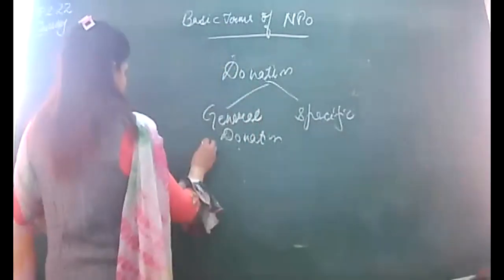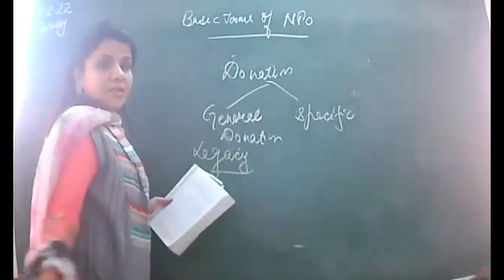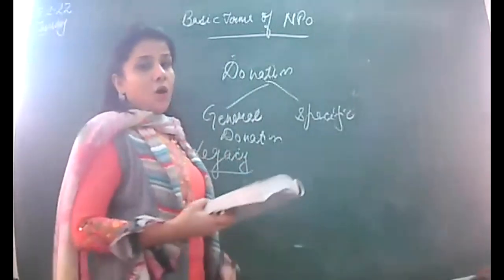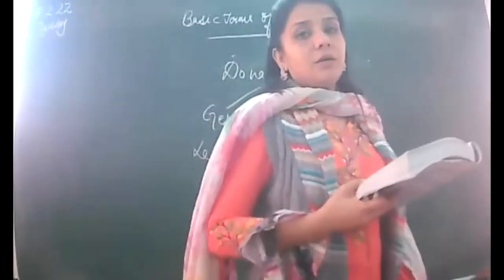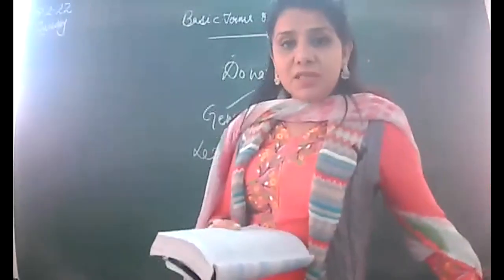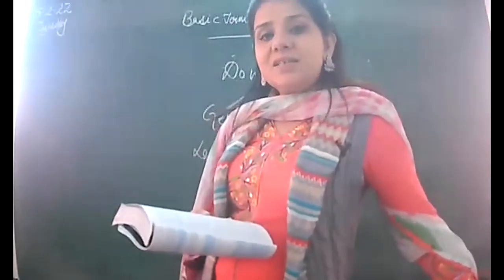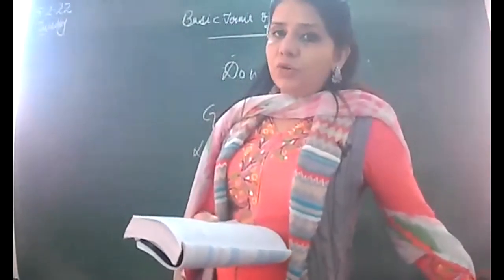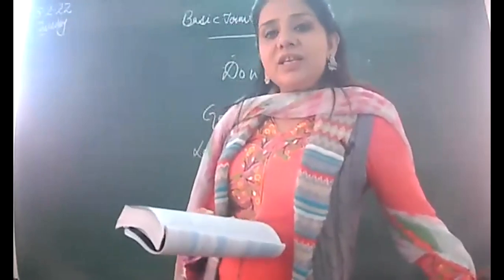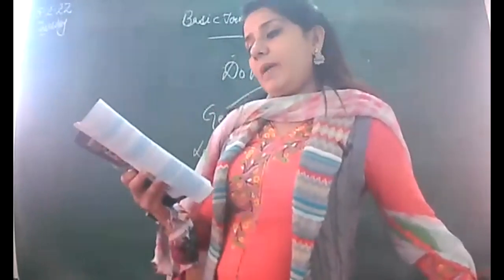Let me finish the topics of basic terms. Legacy is an amount which the NPO receives as per the will of a deceased donor. After the donor's death, through their will, the donation given to us is called a legacy. If the donor attaches a condition, the legacy is to be capitalized. If no condition is attached, the legacy can be your income and shown on the credit side of the income and expenditure account.